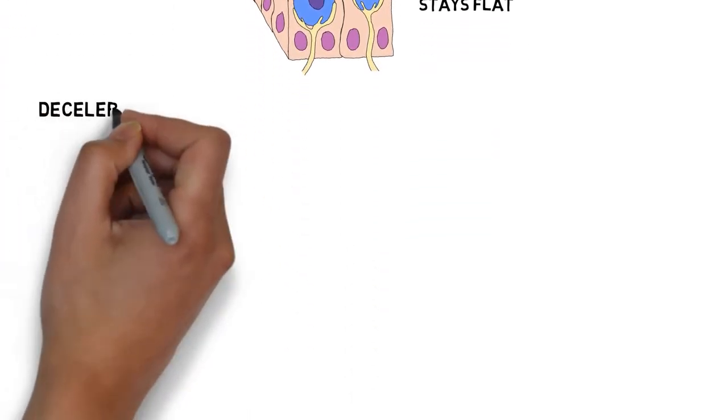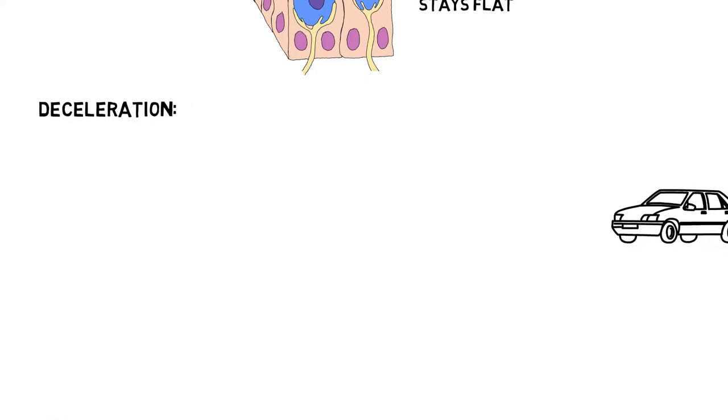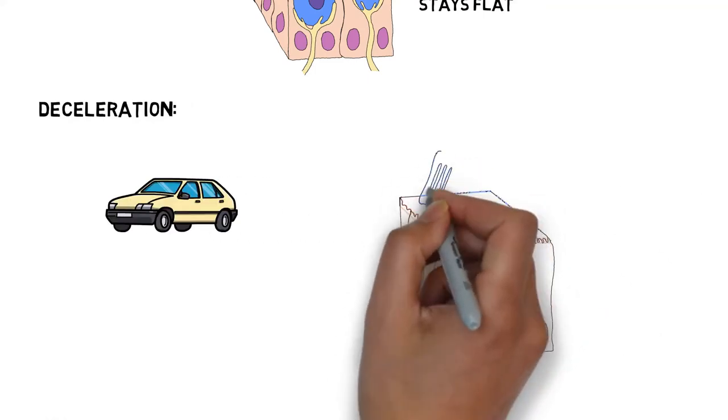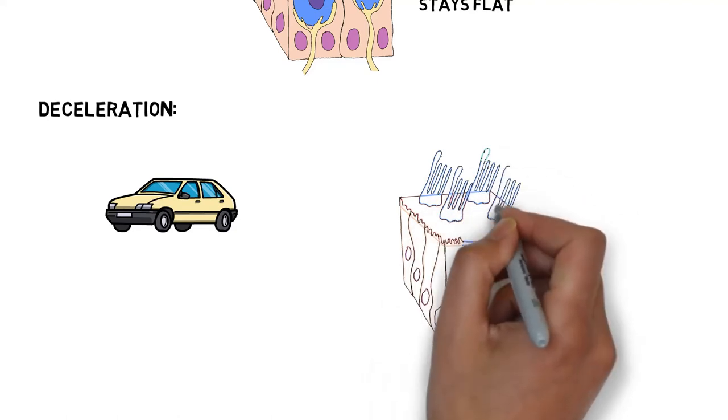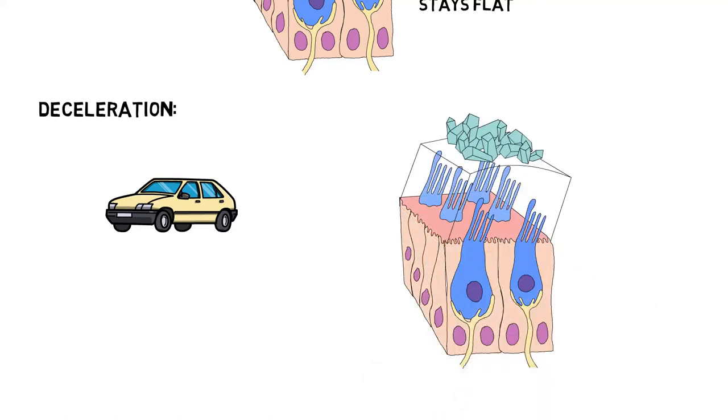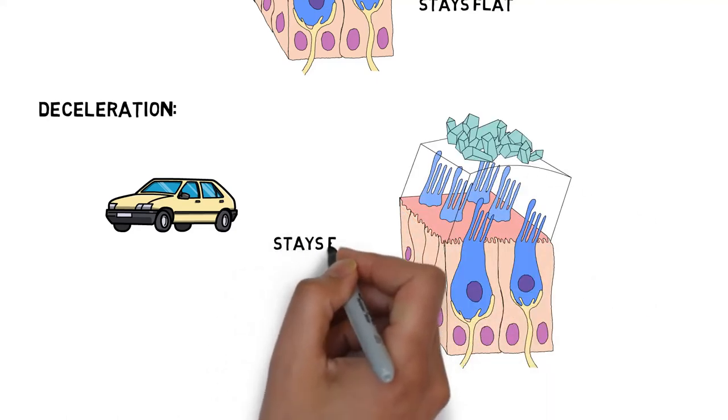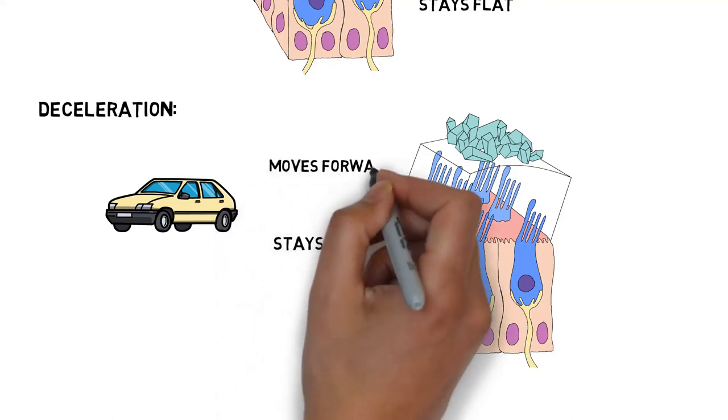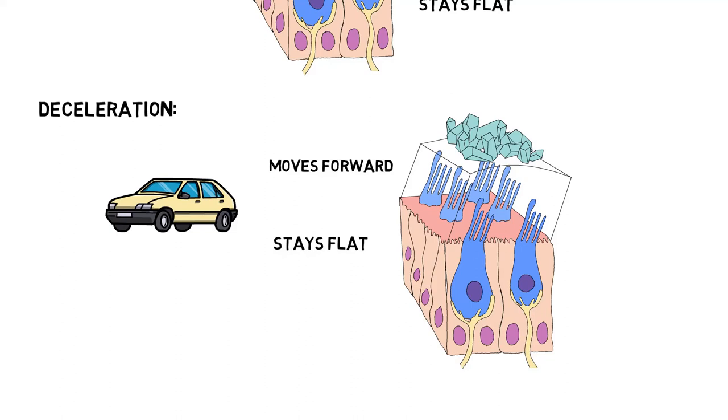When a car brakes suddenly, a person is thrown forward in their seat, restrained from falling out of their seat by their seatbelt. Deceleration is like tipping one's head forward, pushing the autoliths forward, and thus pushing the hair cells forward. This will trigger other receptors in the utricle to hyperpolarize or depolarize a receptor's membrane.